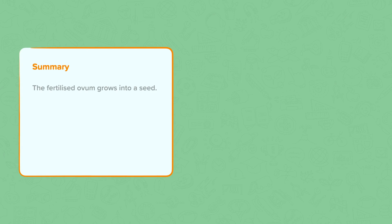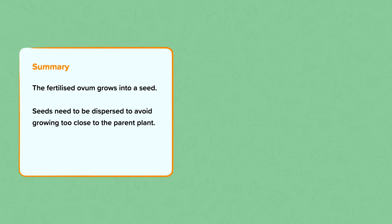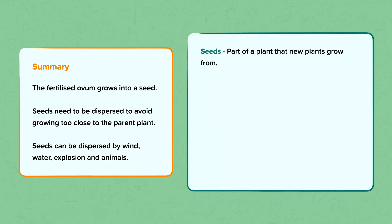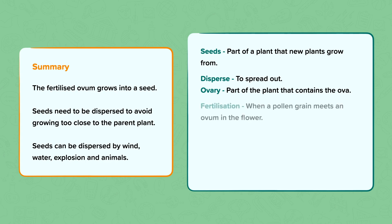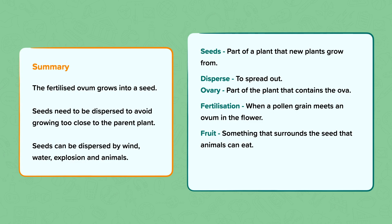Summary. In summary, the fertilised ovum grows into a seed. Seeds need to be dispersed to avoid growing too close to the parent plant. Seeds can be dispersed by wind, water, explosion and animals. Key words: Seeds — part of a plant that new plants grow from. Disperse — to spread out. Ovary — part of the plant that contains the ova. Fertilisation — when a pollen grain meets an ovum in the flower. Fruit — something that surrounds the seeds that animals can eat. Explosion — a type of seed dispersal where the seeds are thrown far away from the parent plant.